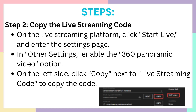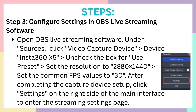Step 2: Choose the live streaming code. On the live streaming platform, click Start Live and enter the settings page. In other settings, enable the 360 panoramic video option so that you can connect your camera to it. Then on the left side, click Copy next to the live streaming code to copy it. As you can see on the screen, I have put it in the picture as well.